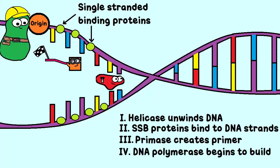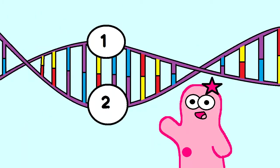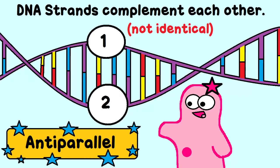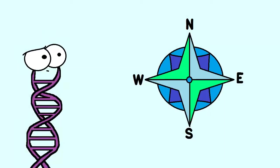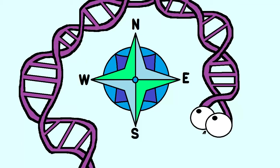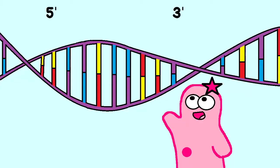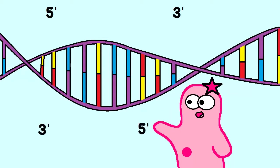Now DNA polymerase can get to work — the important enzyme that adds DNA bases. You have two strands, and they're not identical. They complement each other, and they are also anti-parallel, meaning they don't go in the same direction. With DNA, we don't say a strand goes north or south. The directions for DNA strands are a little different: we say that DNA either goes 5' to 3' or 3' to 5'. This can seem very confusing — what does that mean?